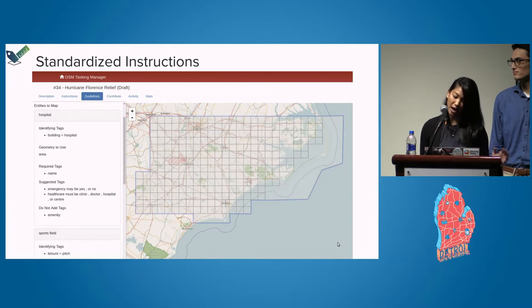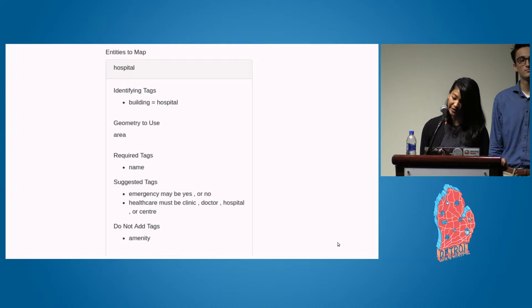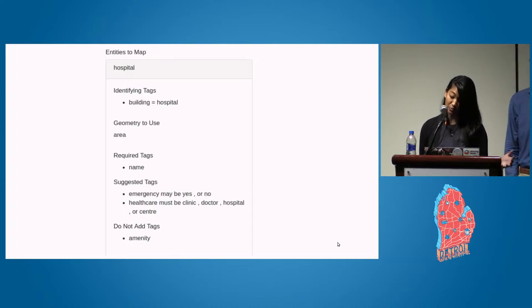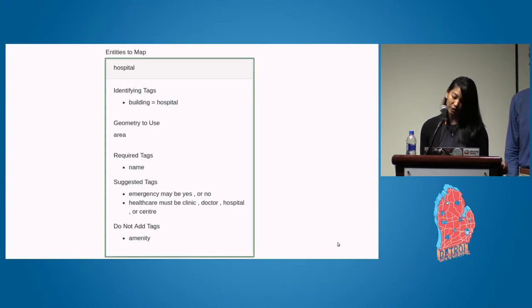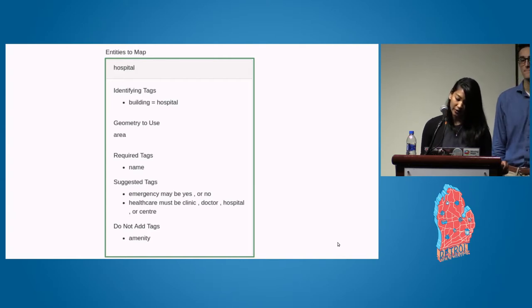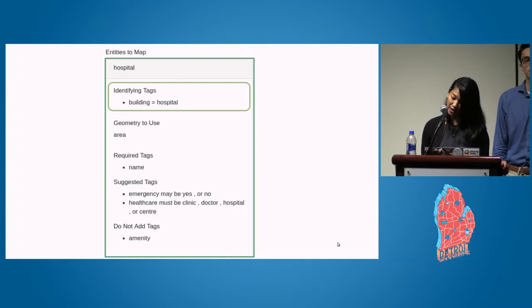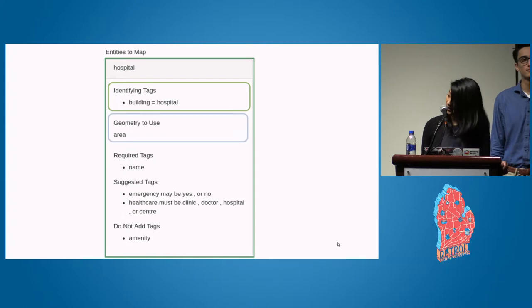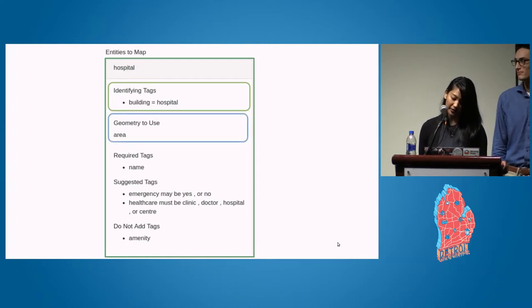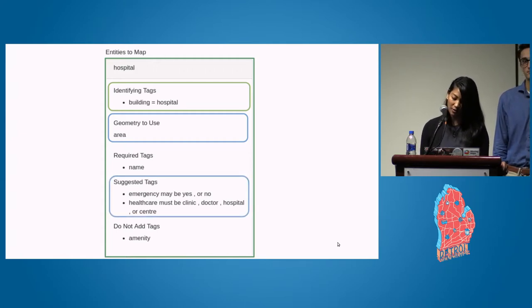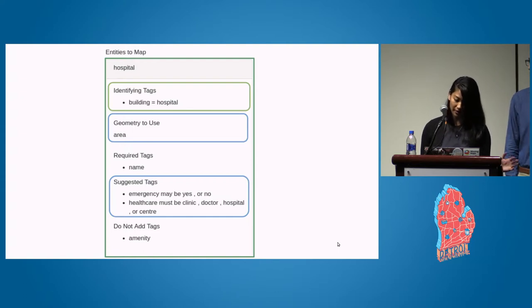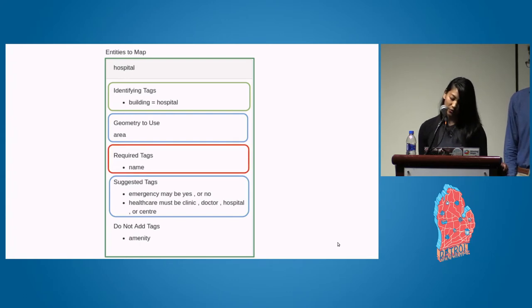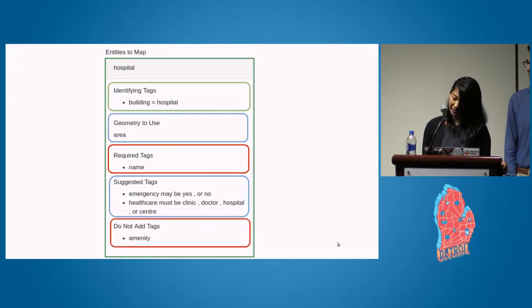Everything the campaign manager enters gets output as standardized formatted instructions for mappers and validators to see. These instructions are not only a clear-cut way for mappers and validators to see the guidance, but they drive the creation of presets and validation rules used in the editors. Presets will be created for each feature with the fields indicated. In this scenario, there will be a hospital preset created. The identifying tag building equals hospital will automatically get applied when using the preset. This preset would only be allowed to be applied to the geometry indicated. Fields like name, emergency, and healthcare are shown in the preset along with possible values — only clinic, doctor, hospital, and center will appear as options for the healthcare key. The validation rule will check if hospitals have the required tag name, and will check that tags that should not be added are not added on the feature.